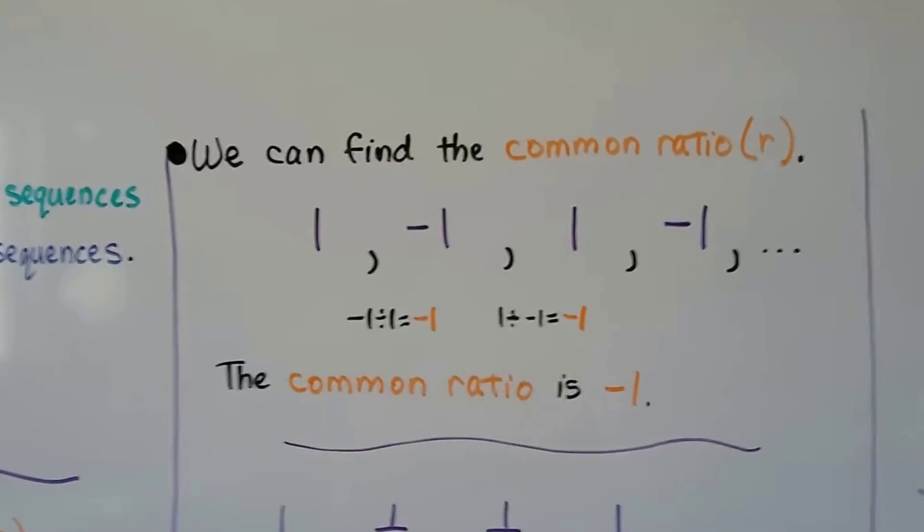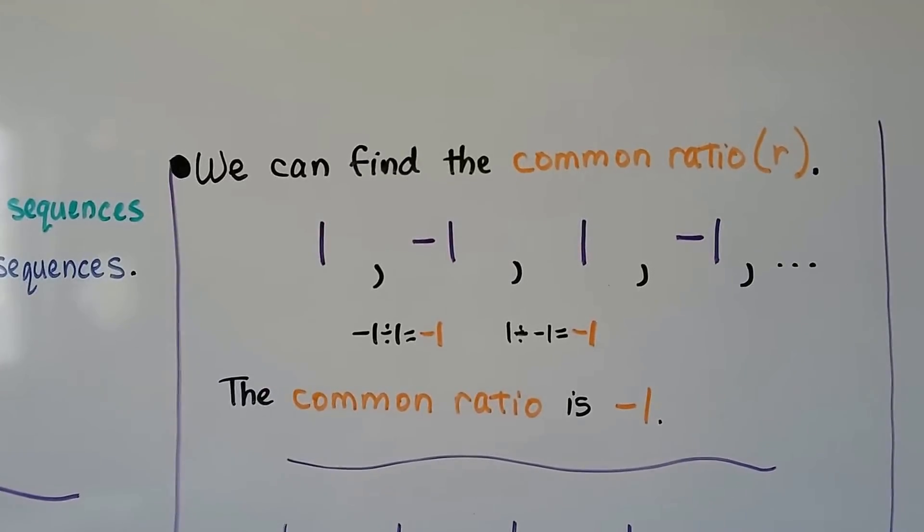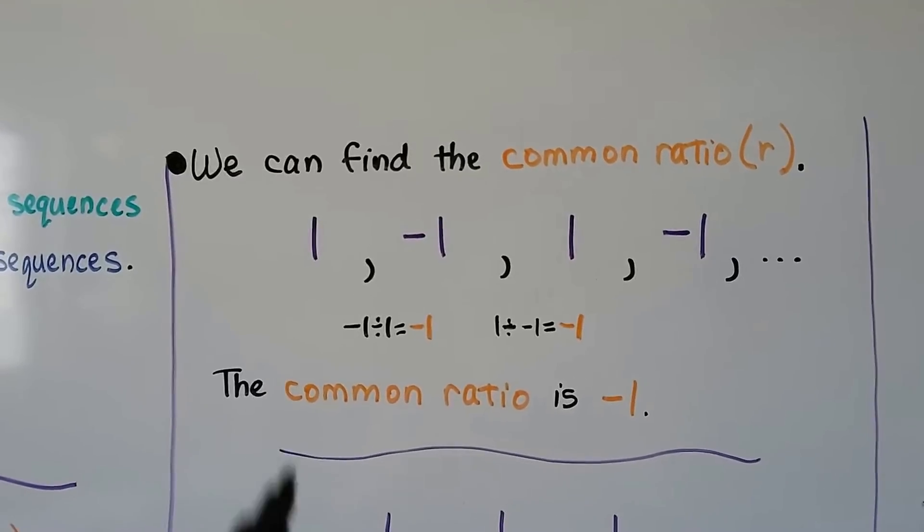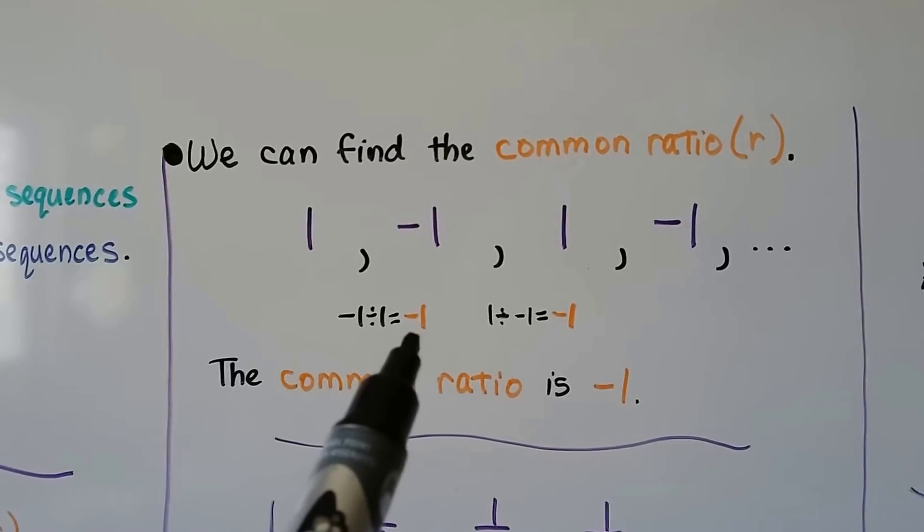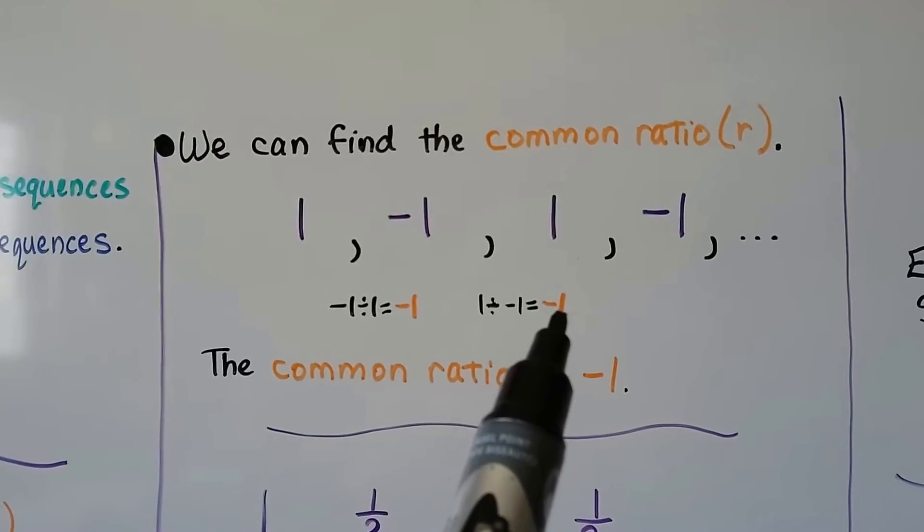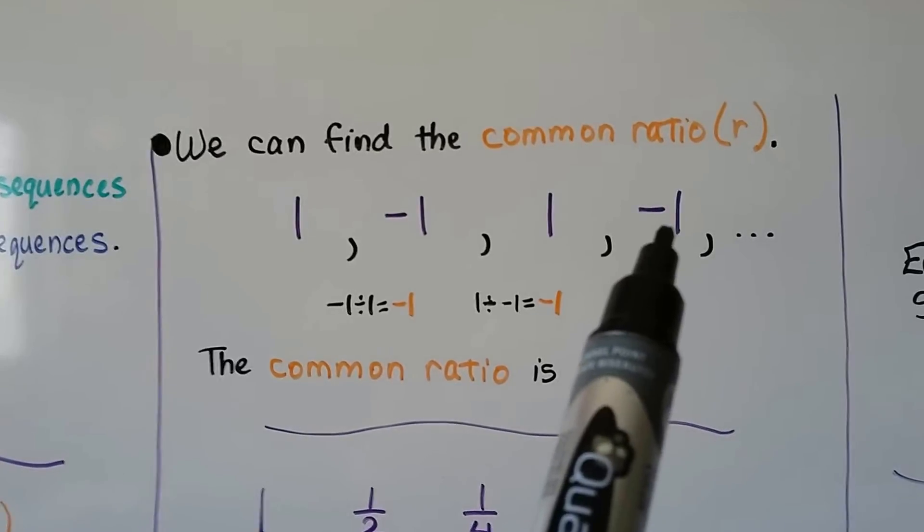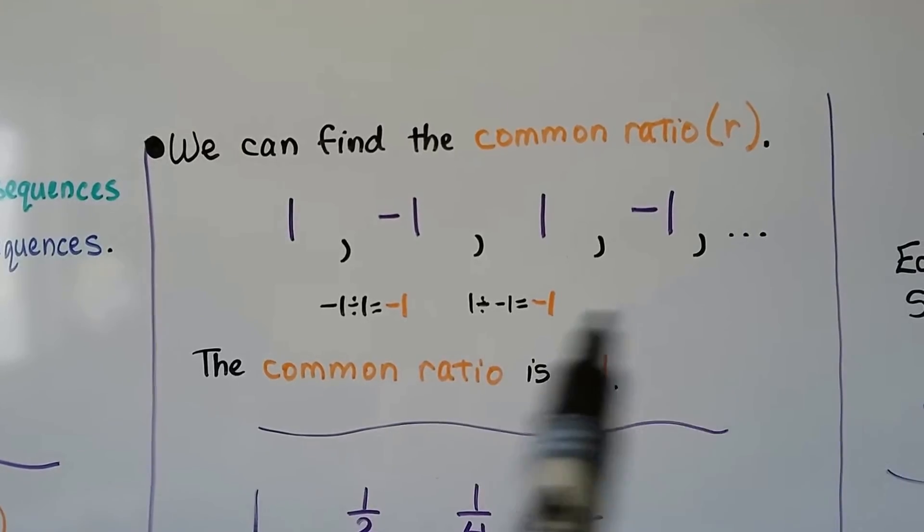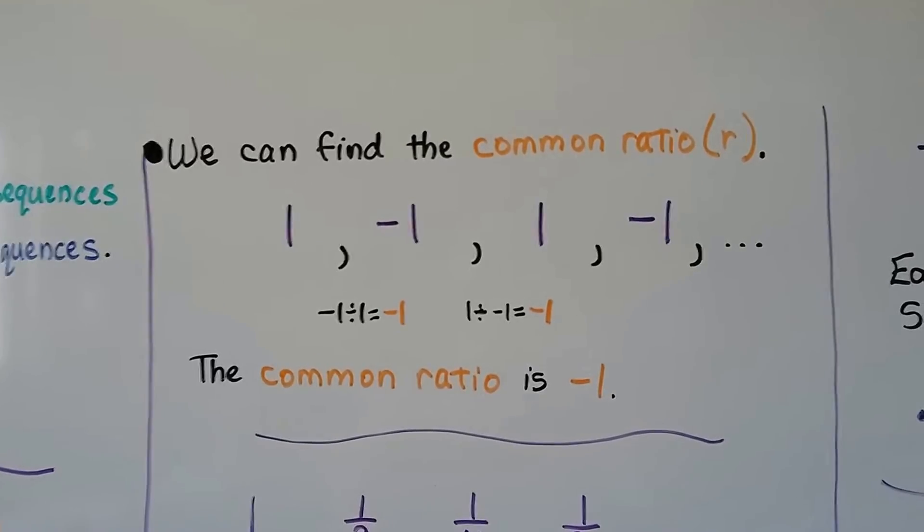We can find the common ratio, r. This is a little different because we have 1, negative 1, 1, negative 1. We have negative 1 divided by 1 that gives us negative 1. We have 1 divided by negative 1 gives us negative 1. We really don't need to do it again because we already did negative 1 divided by 1, so it just keeps going. The common ratio is negative 1.